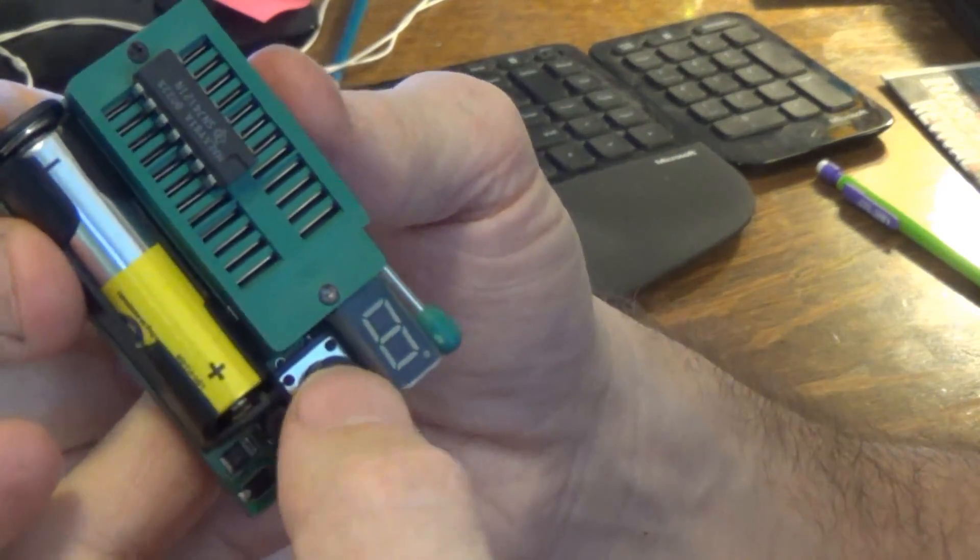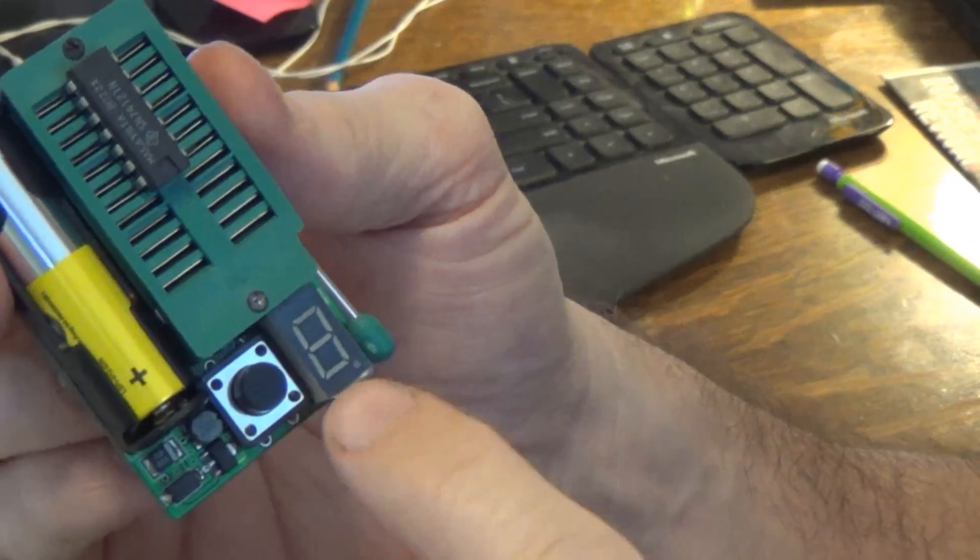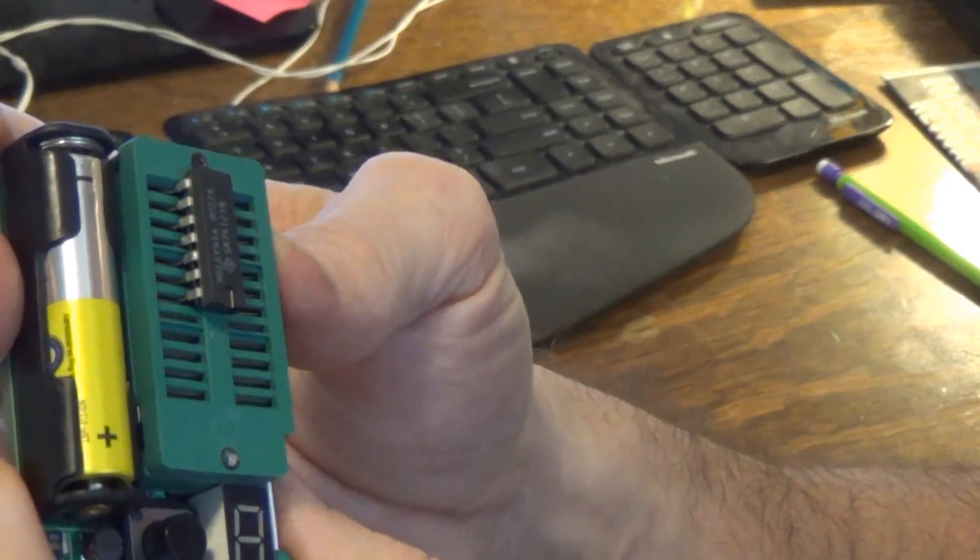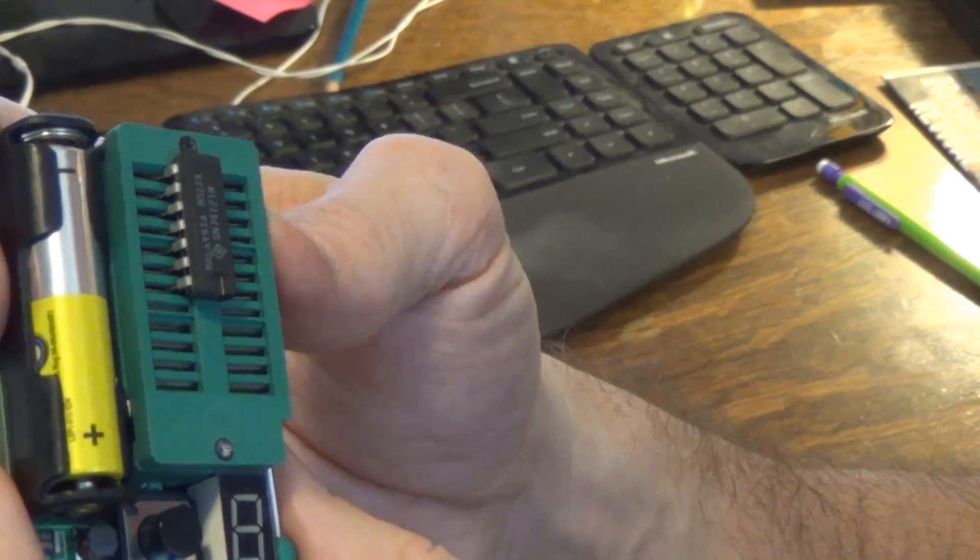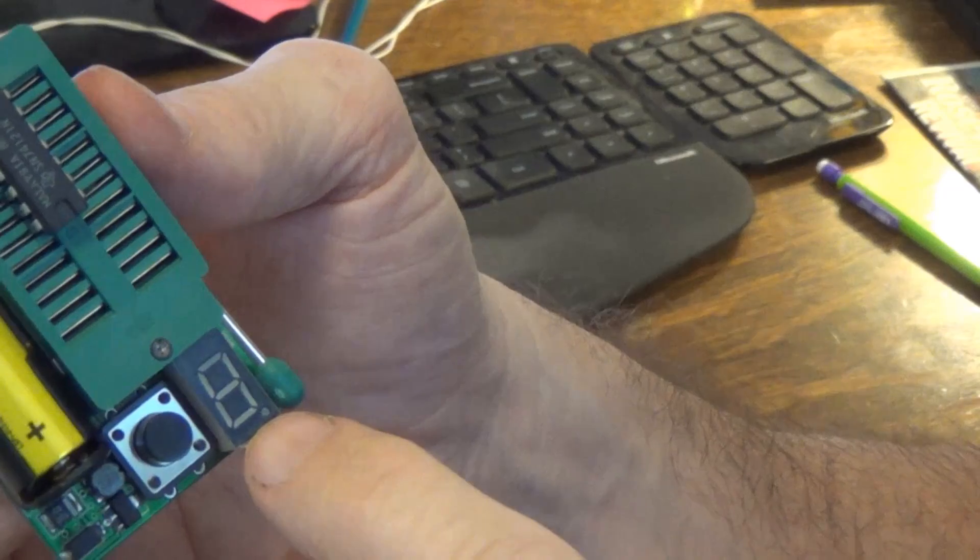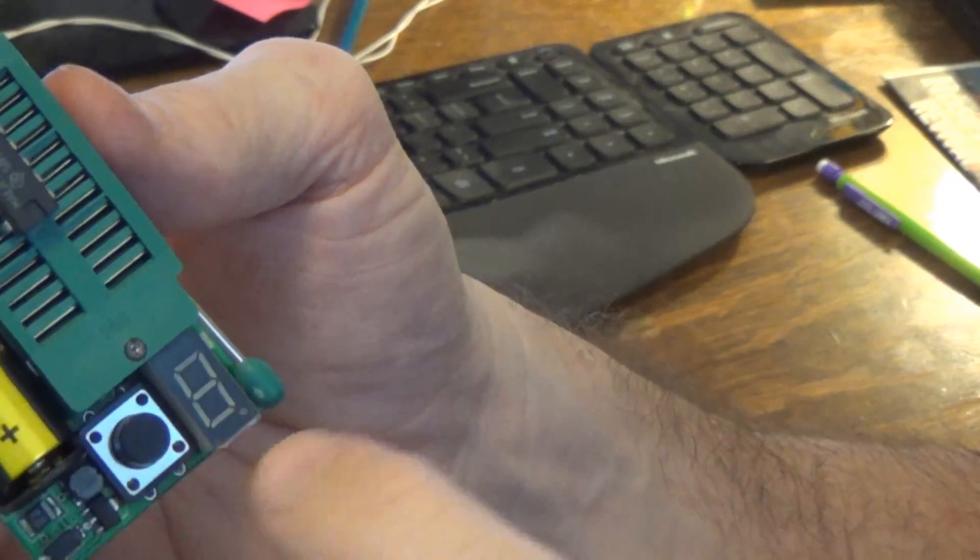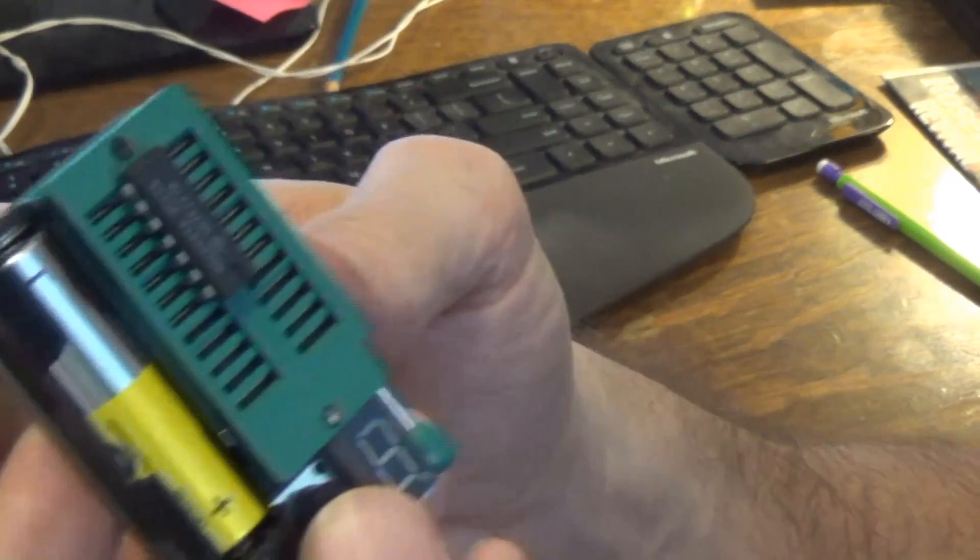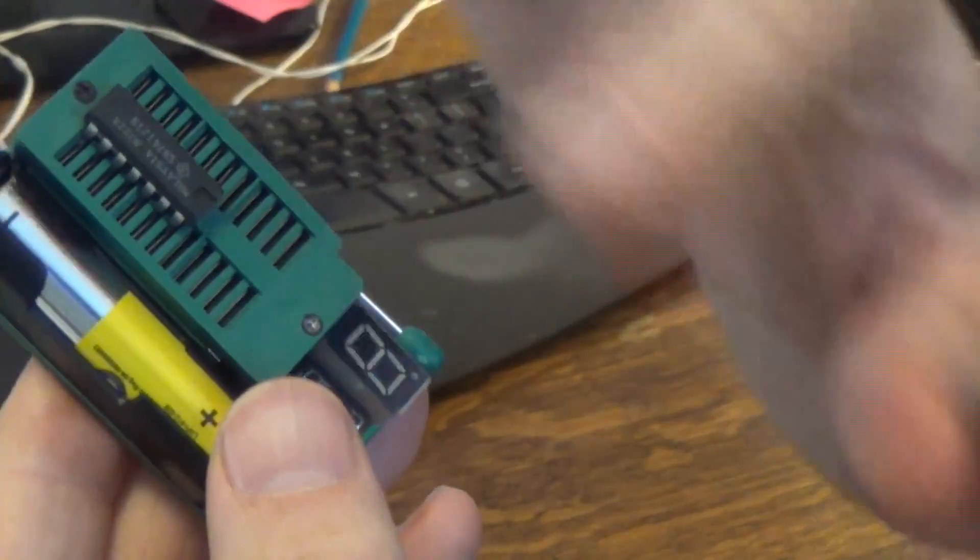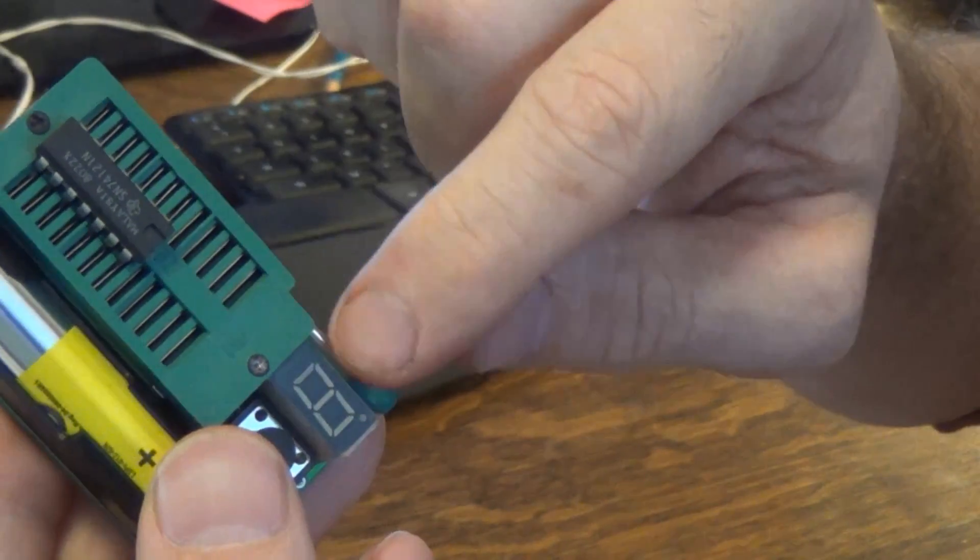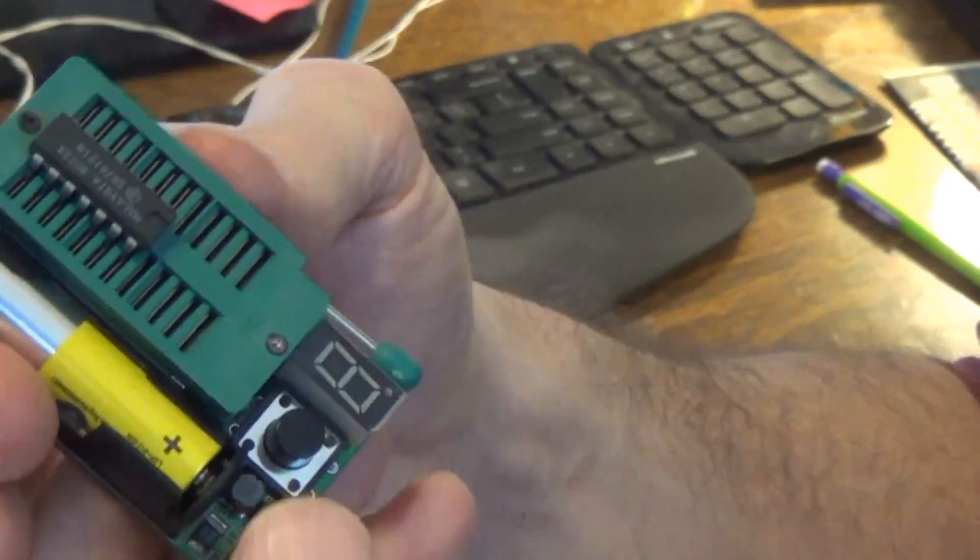So apparently all I have to do is push this button and numbers start displaying on the face. And since it's a 74121 chip it should flash 74121 or 74-121 depending on what it wants to do. And if the chip is no good it will show an error message or spell out ERR. So let's go ahead and give it a shot.